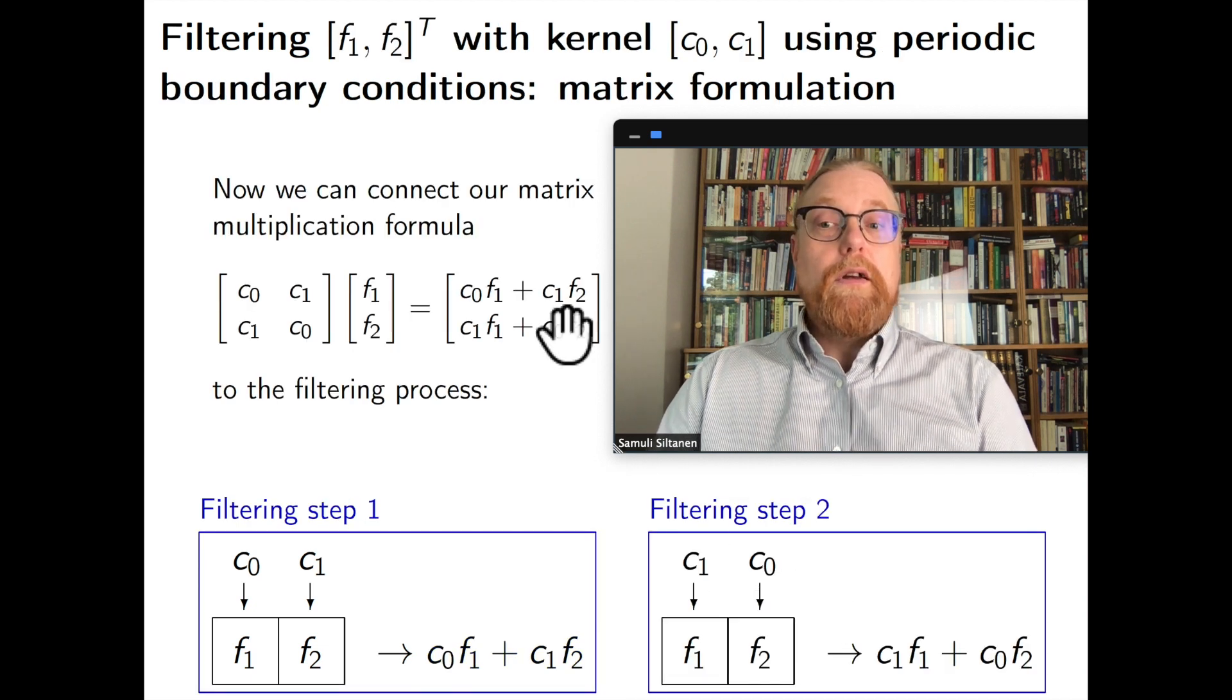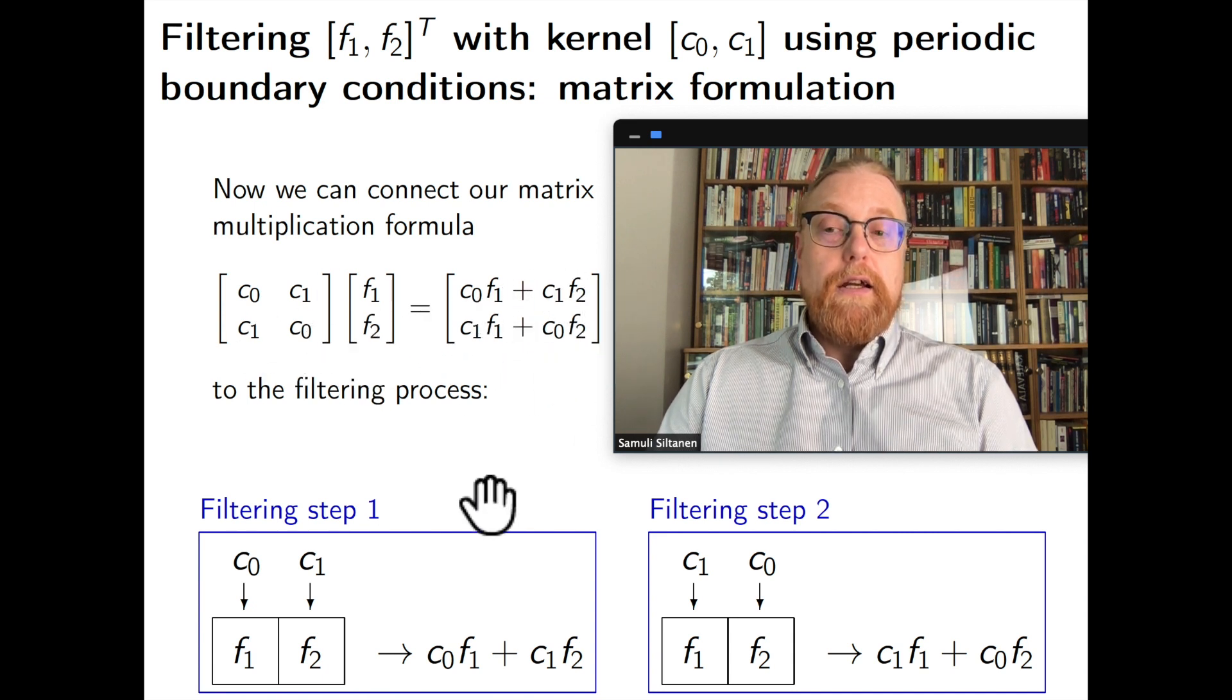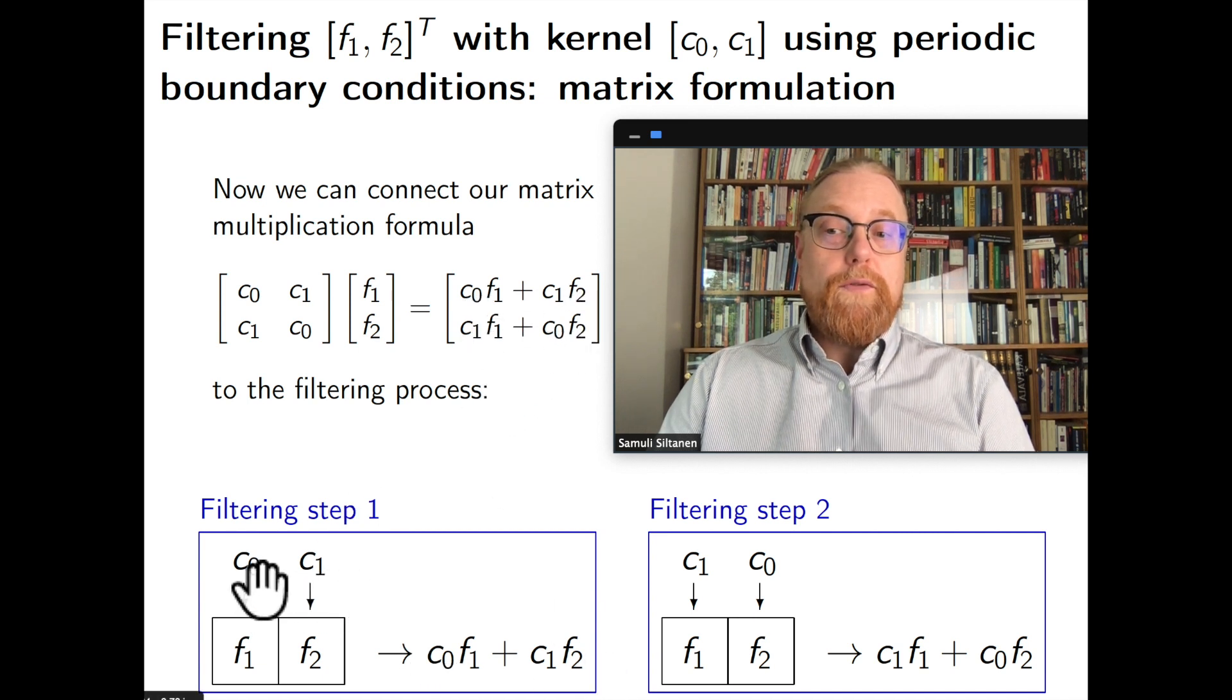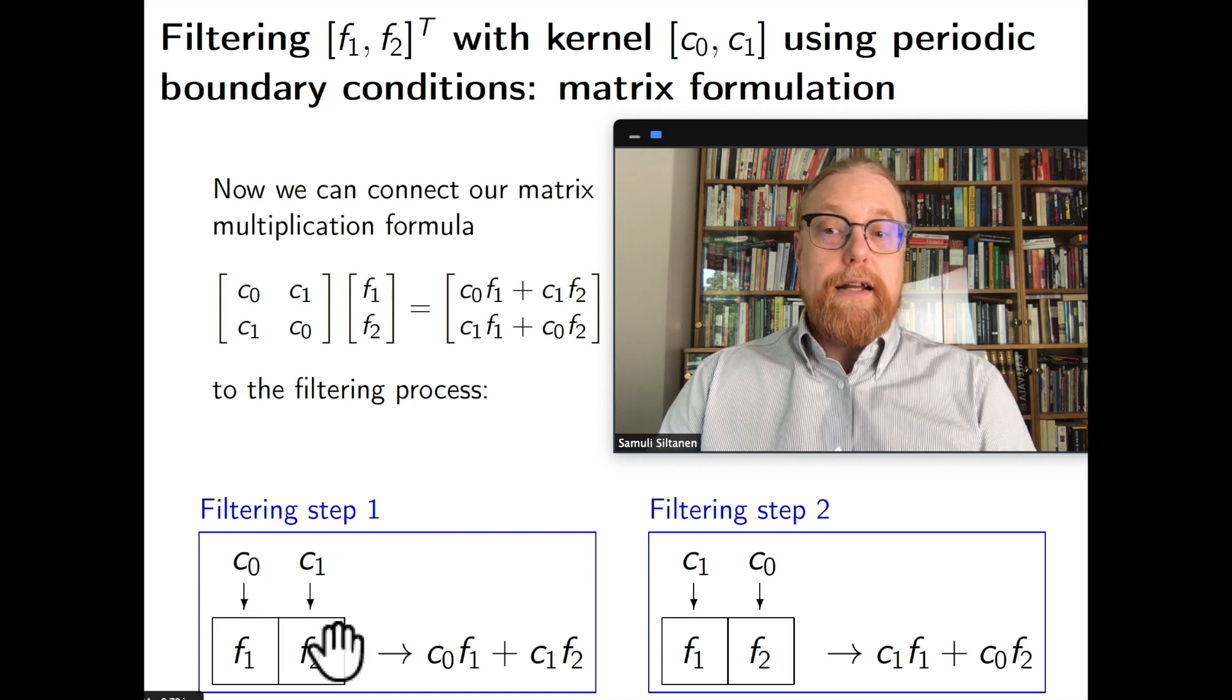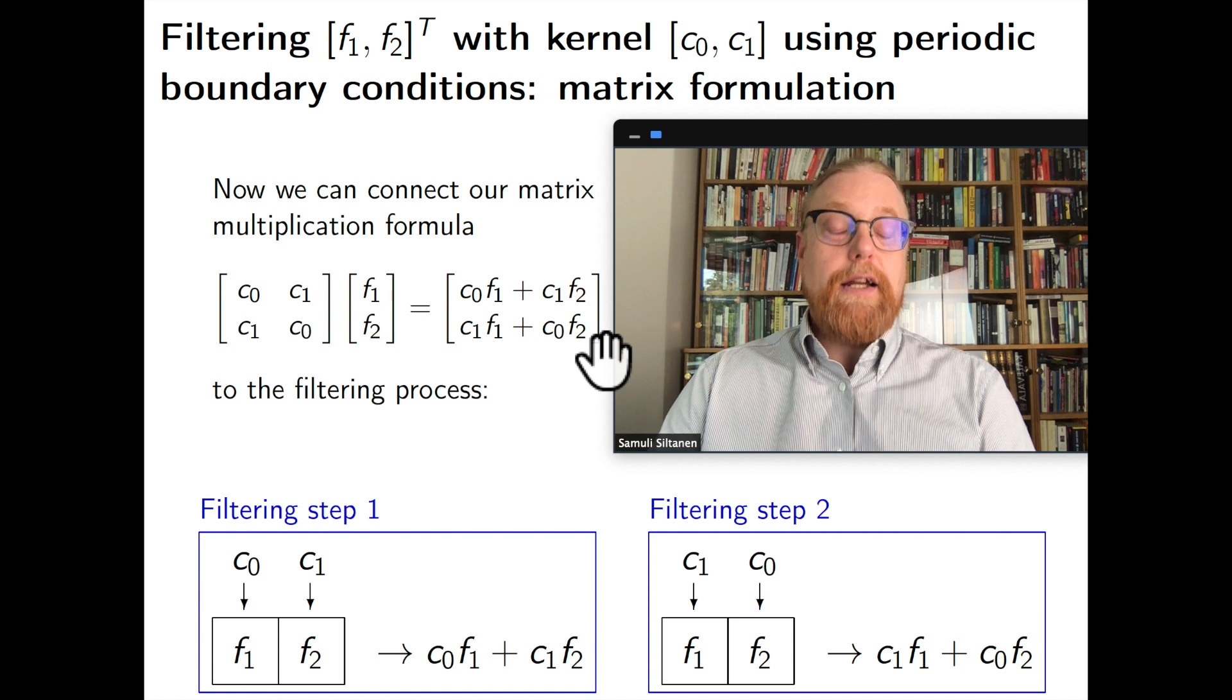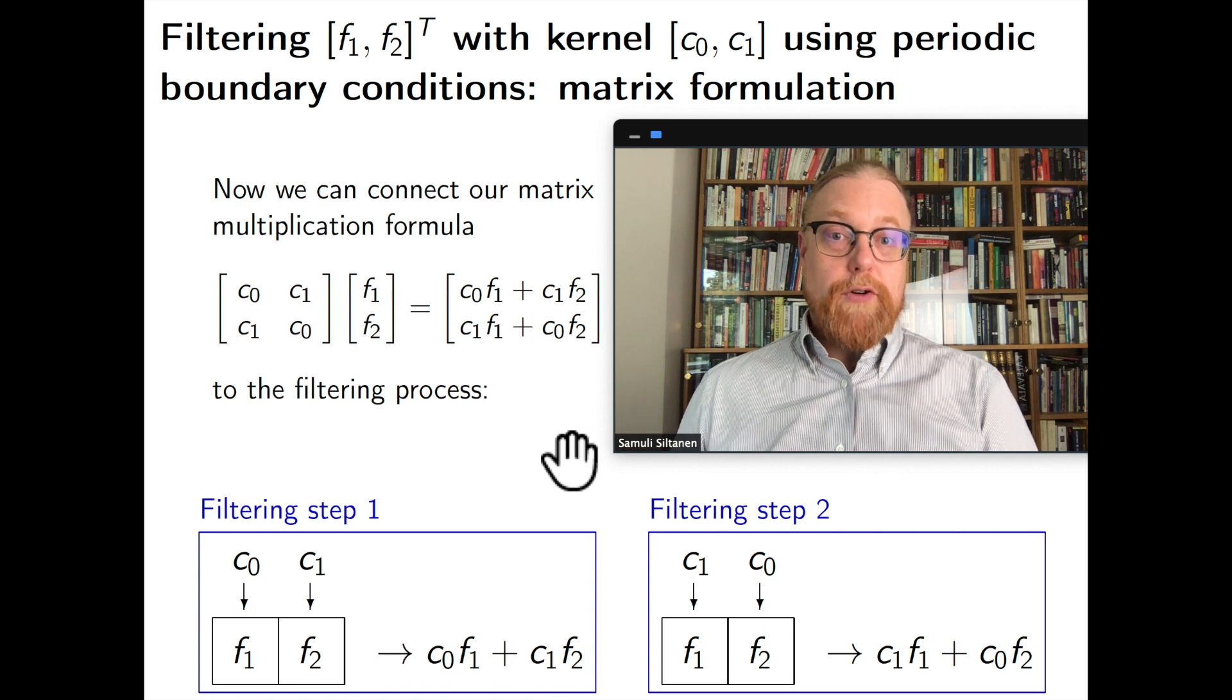We just flip it over to this side and that's how we get by multiplying and summing this result. So this is the matrix vector multiplication with the circulant matrix and here you see the result. That's how circulant matrices are implementing filtering with periodic boundary conditions.